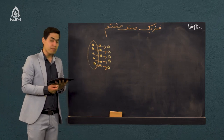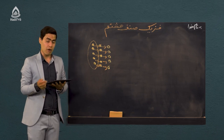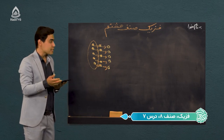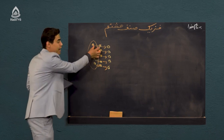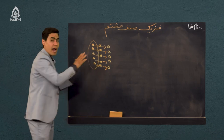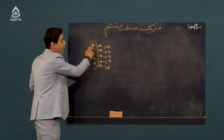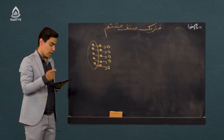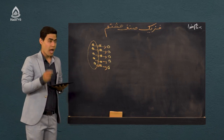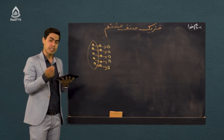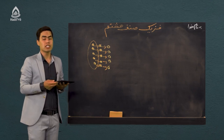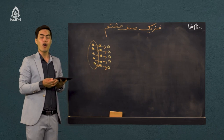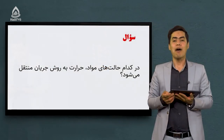در کدام حالت حرارت با روش هدایت بهتر انتقال پیدا می‌کند؟ در جسم جامد چون فاصله بین مولکول‌ها کم است و مولکول‌ها نزدیک به هم قرار دارند، می‌تواند سریع‌تر انرژی را به مولکول بعدی منتقل کند. پس در حالت جامد انتقال حرارت به روش هدایت بهتر انجام می‌گیرد. در بین جامدات هم فقط فلزات هستند که می‌توانند انتقال به خوبی به روش هدایت انجام دهند، علت آن به الکترون‌های آزاد برمی‌گردد.